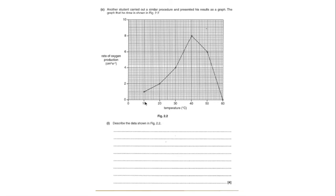So for example I might say at 10 degrees, really important you use the units as well. At 10 degrees my rate is one centimetre cubed per second. Whereas at 40 degrees centigrade my rate of oxygen production is at 8 centimetre cubed per second. So you've got to give at least two points and compare those points.